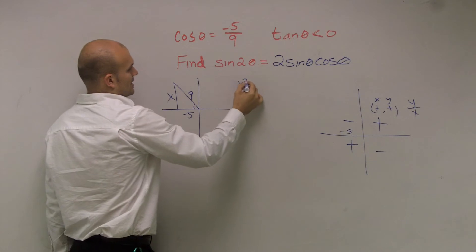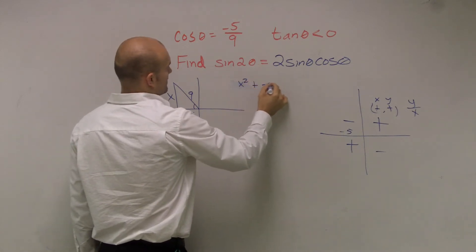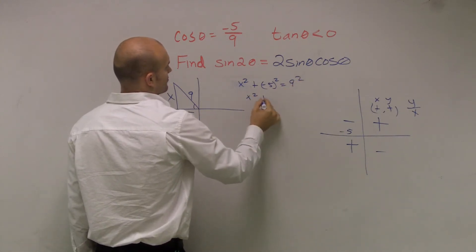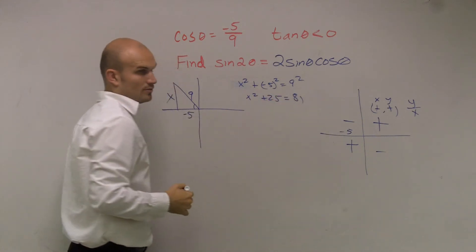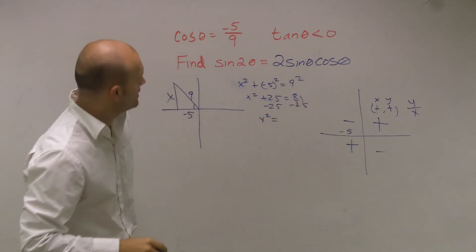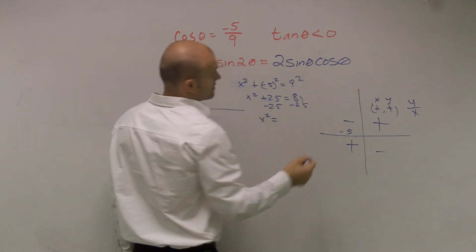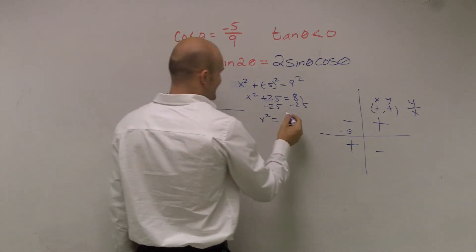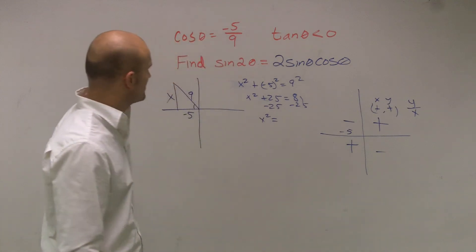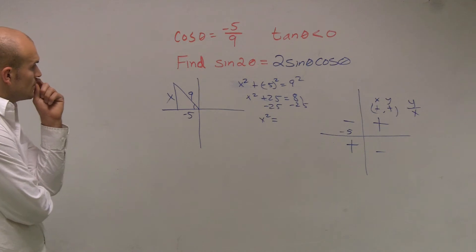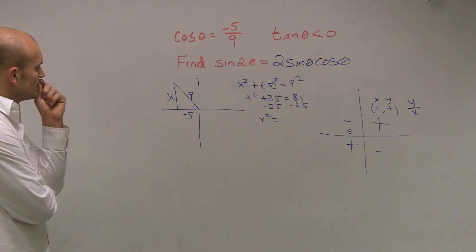I'll just write it this way. x squared plus negative 5 squared equals 9 squared. So we get x squared equals... plus 25 equals 81. Subtract the 25. x squared is going to equal, what is it now? It's 36, right? No, 36.